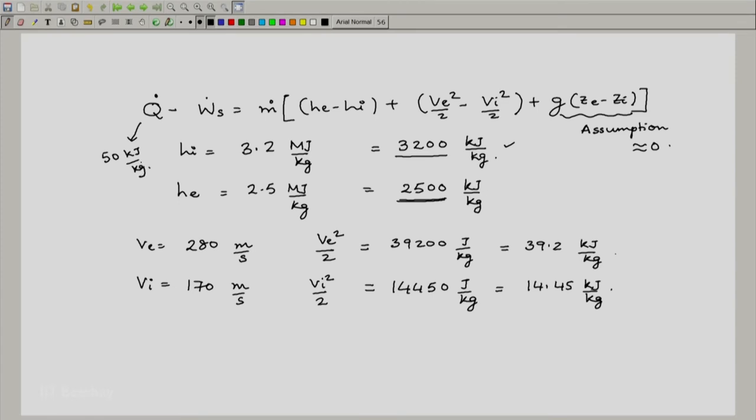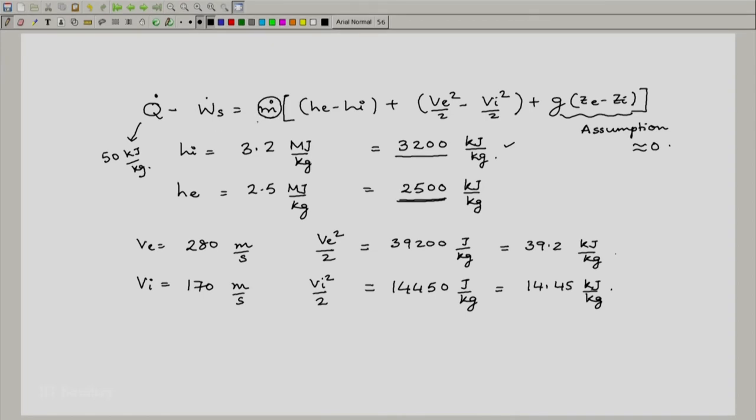And if you look at the delta H, which is around 700 kilojoules per kg, you realize that 50 is not a negligible number, and definitely one must consider it. Now we have all the numbers. We have actually been given Q_dot by m_dot. So let me write down the equation in terms of Q_dot by m_dot and W_s_dot by m_dot by just dividing the whole equation by m_dot.